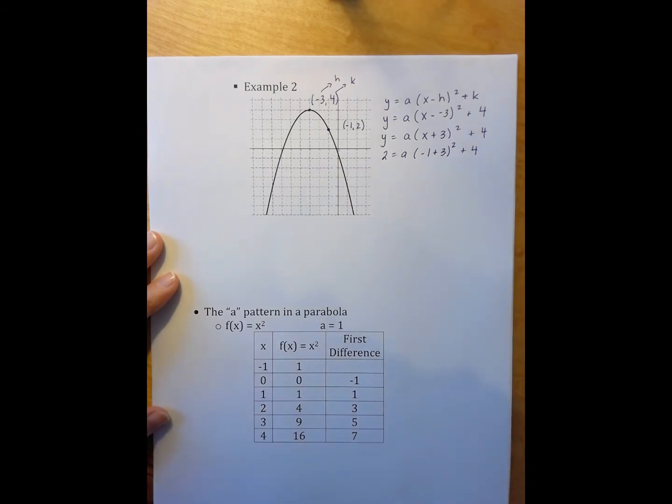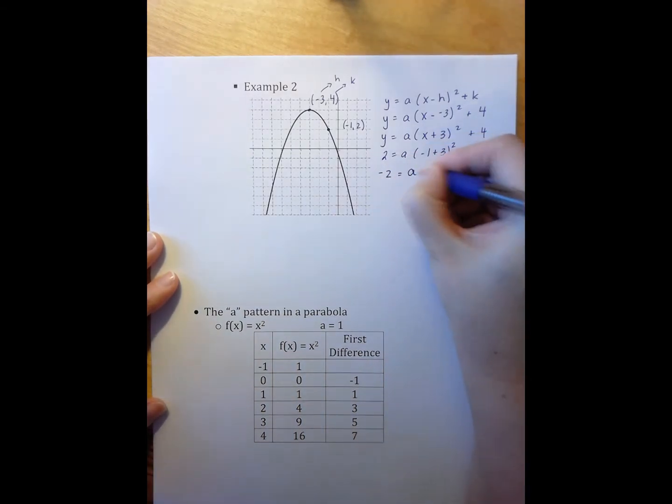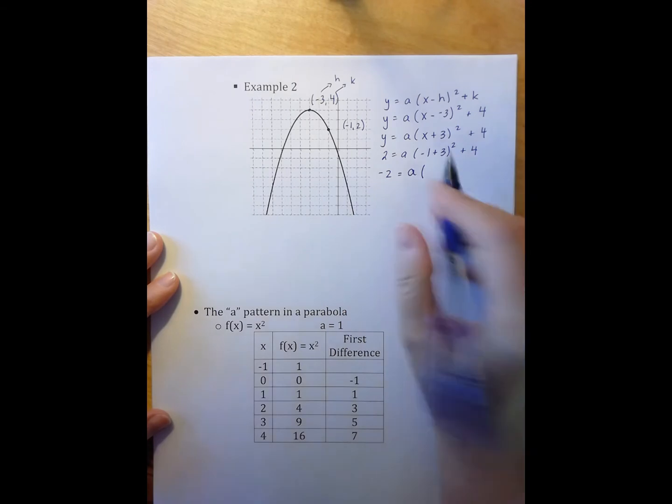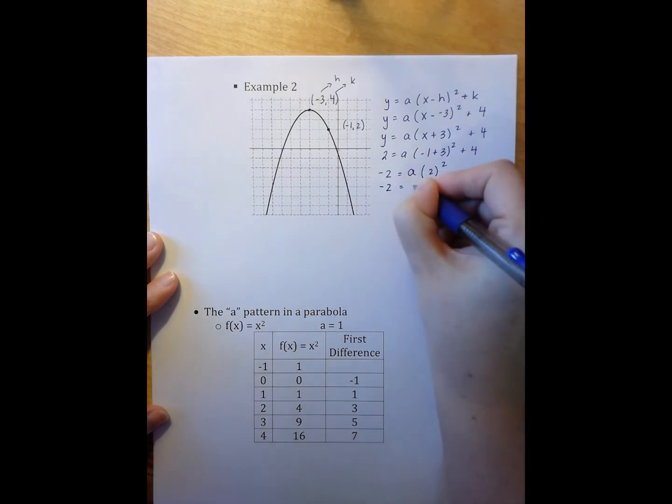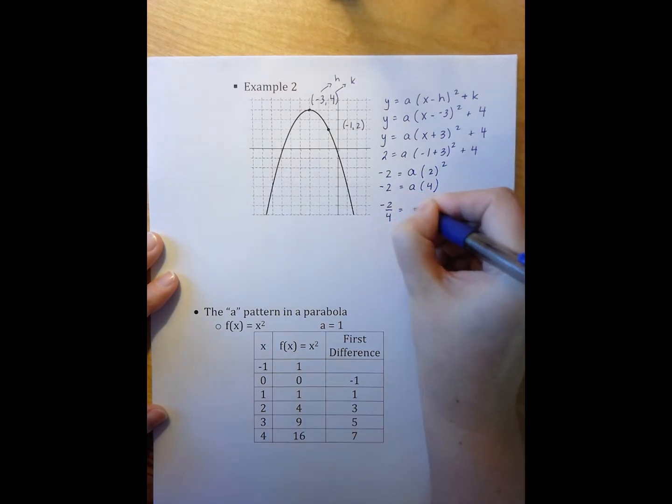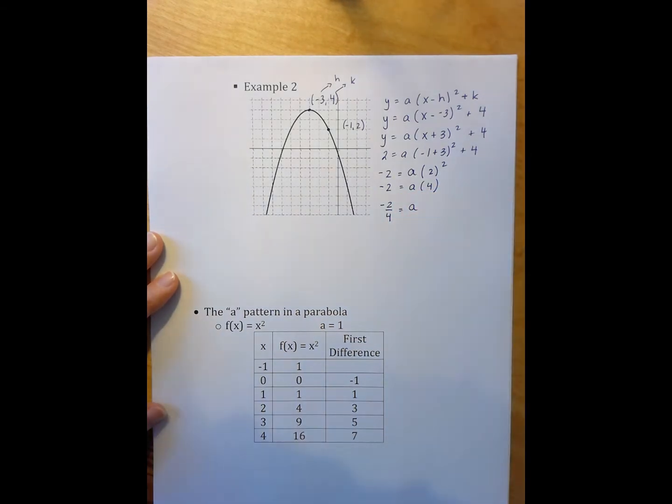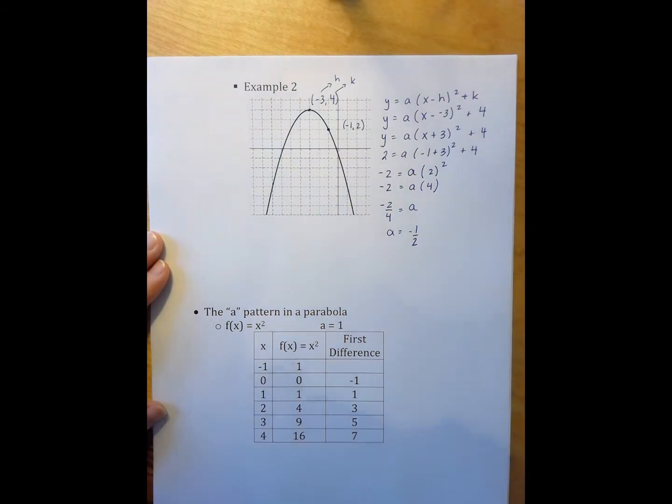Many different ways to start this particular solving process. I'm going to subtract 4 on both sides first, so that gets me negative 2 equals a times, and I'm going to simplify the negative 1 plus 3. So, I now can simplify the 2 squared. And then I'm going to divide both sides by 4, which means that I end up with a equaling negative 2 over 4. But of course, I can rewrite that as negative 1 half.